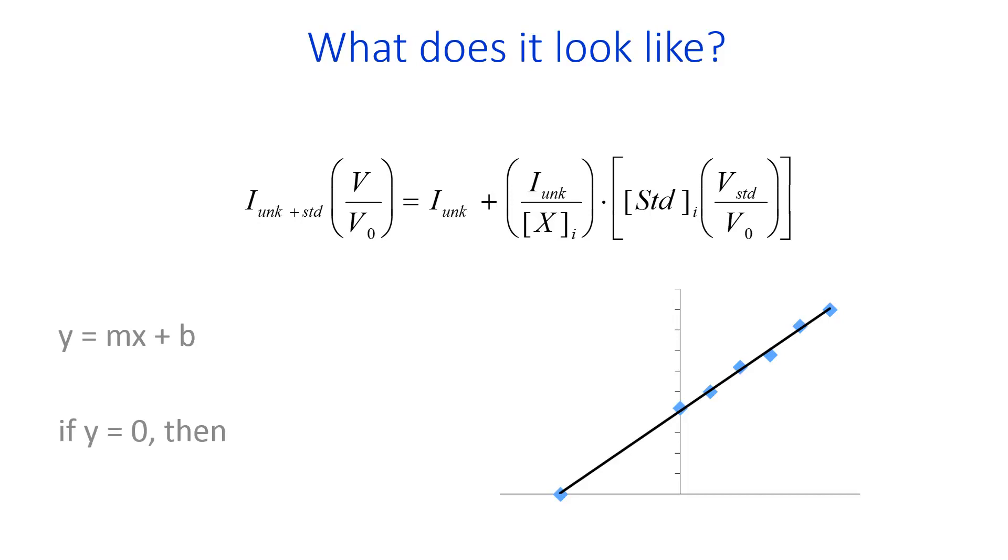What you do to analyze this data is you forecast that line, you fit that data to a line, and then extend the line back to the x-intercept where y equals 0. At this point, x equals negative b over m. And so this point tells you the concentration of unknown in your standard, or of standard in your unknown.